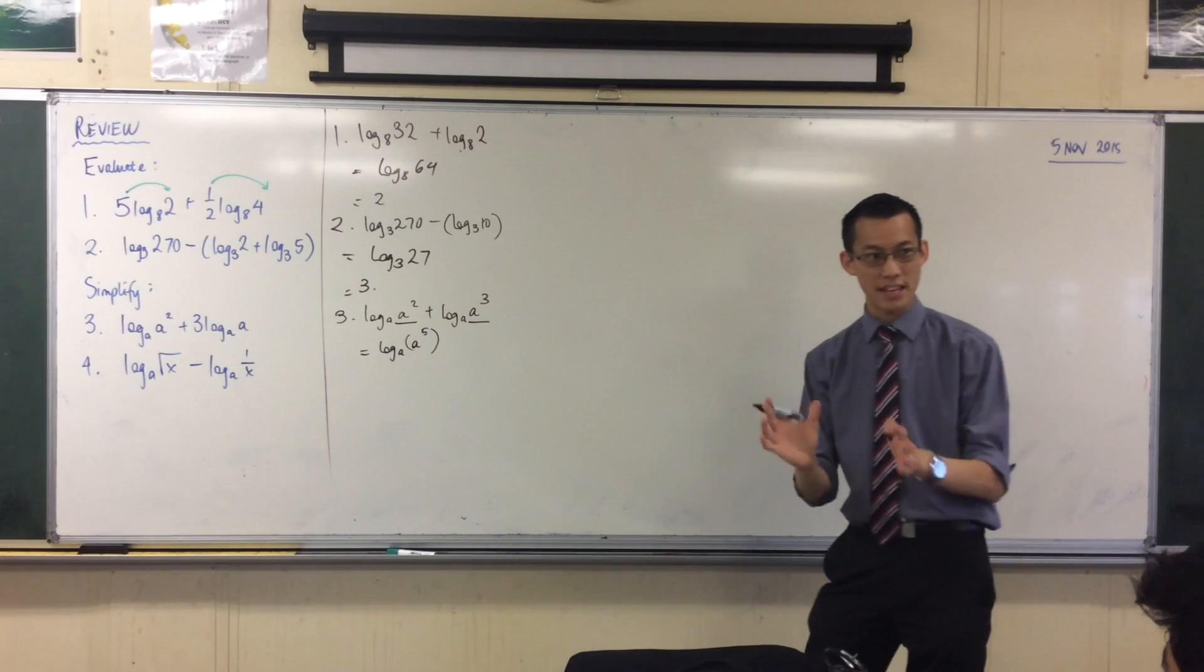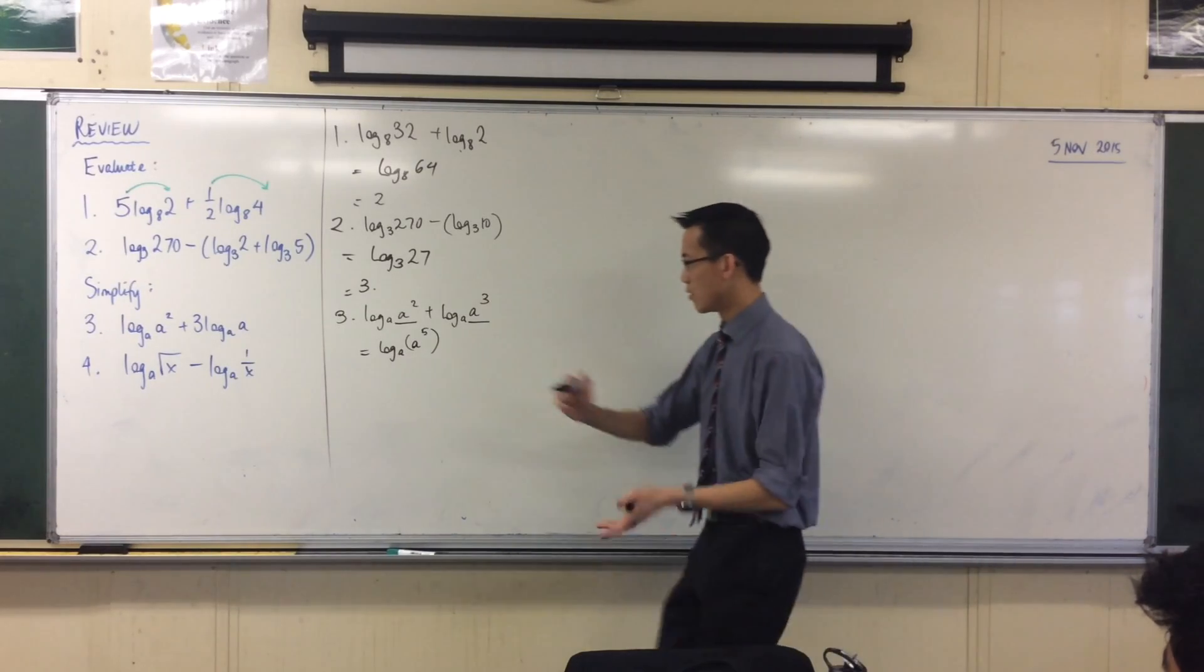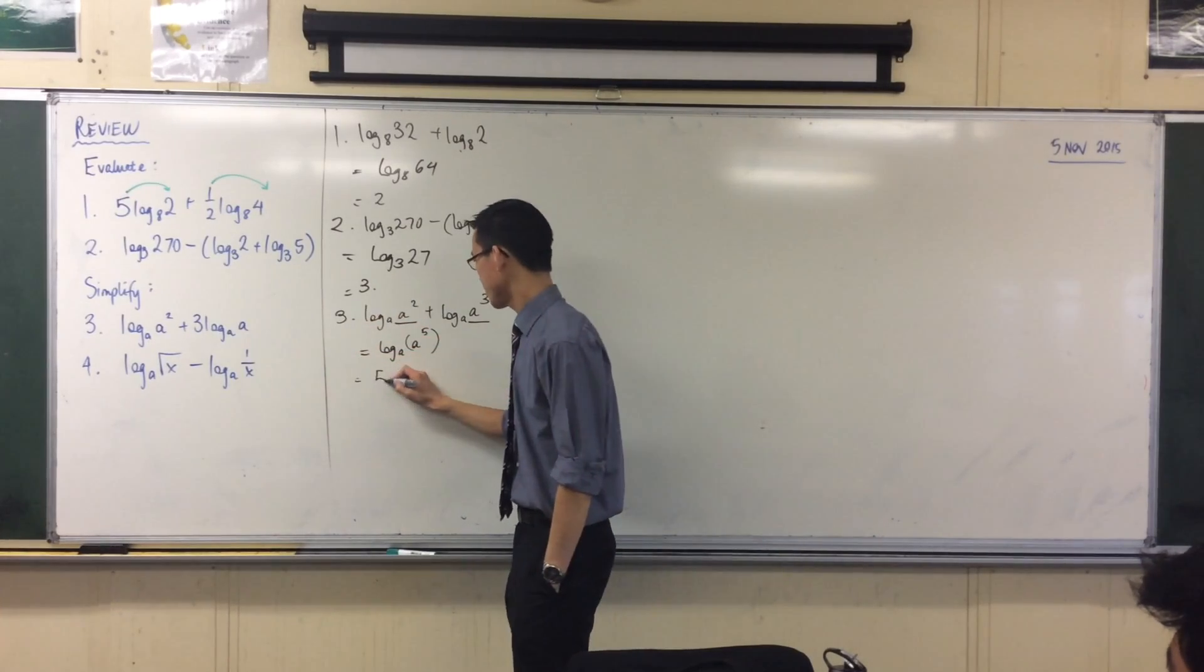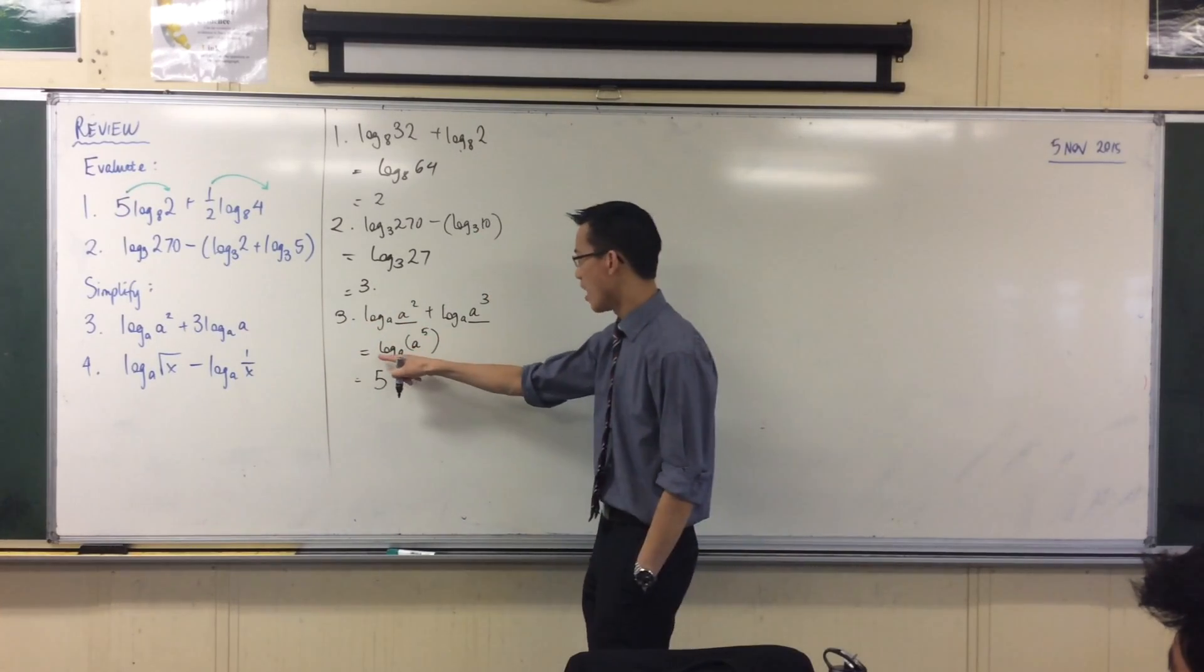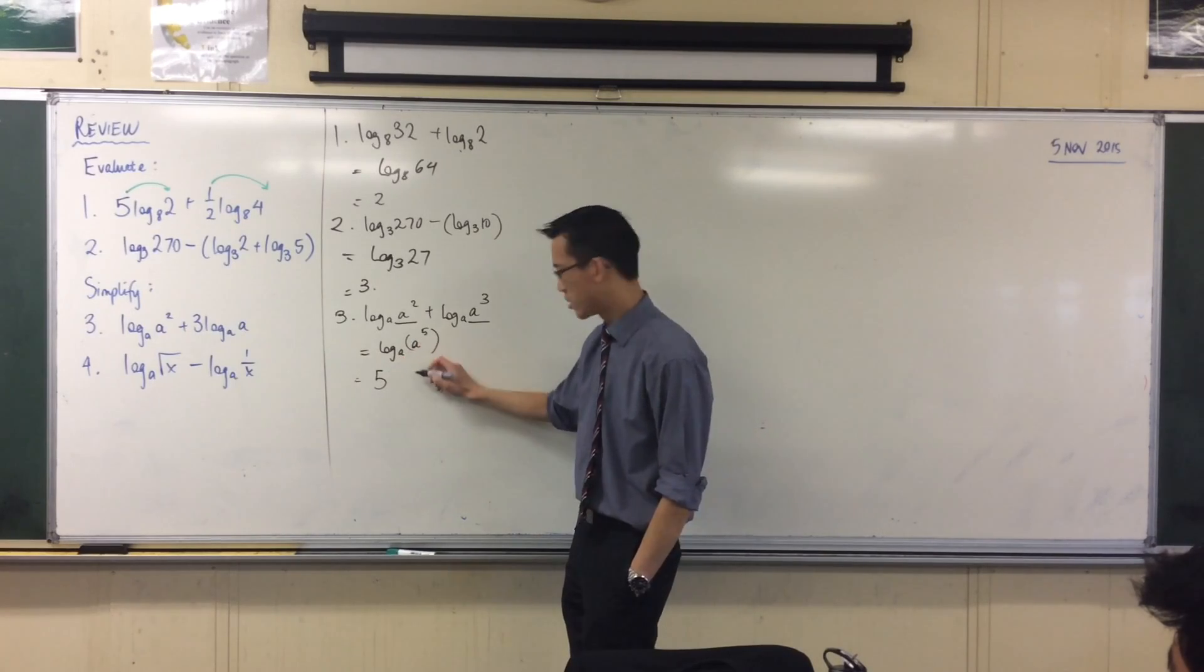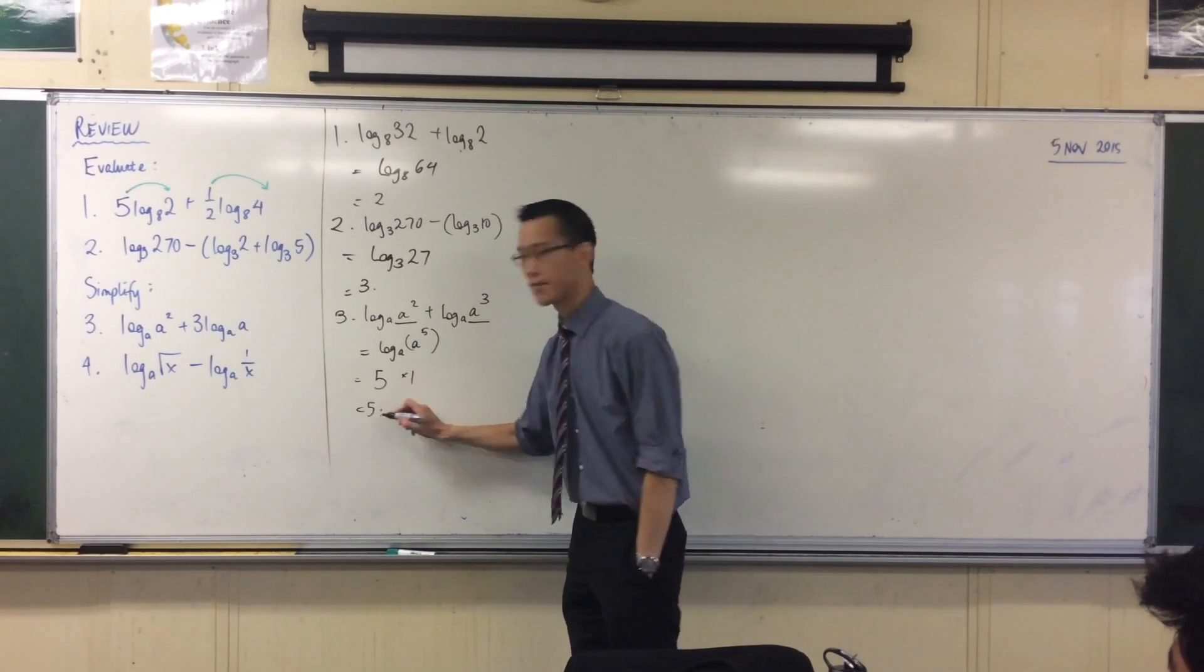So now I can either do this next part in one or two steps. What am I going to do with this 5? A bit pesky. I can bring that out the front. 5. And then say okay, well what's left is log base a of a, which is just 1, so that's just 5.